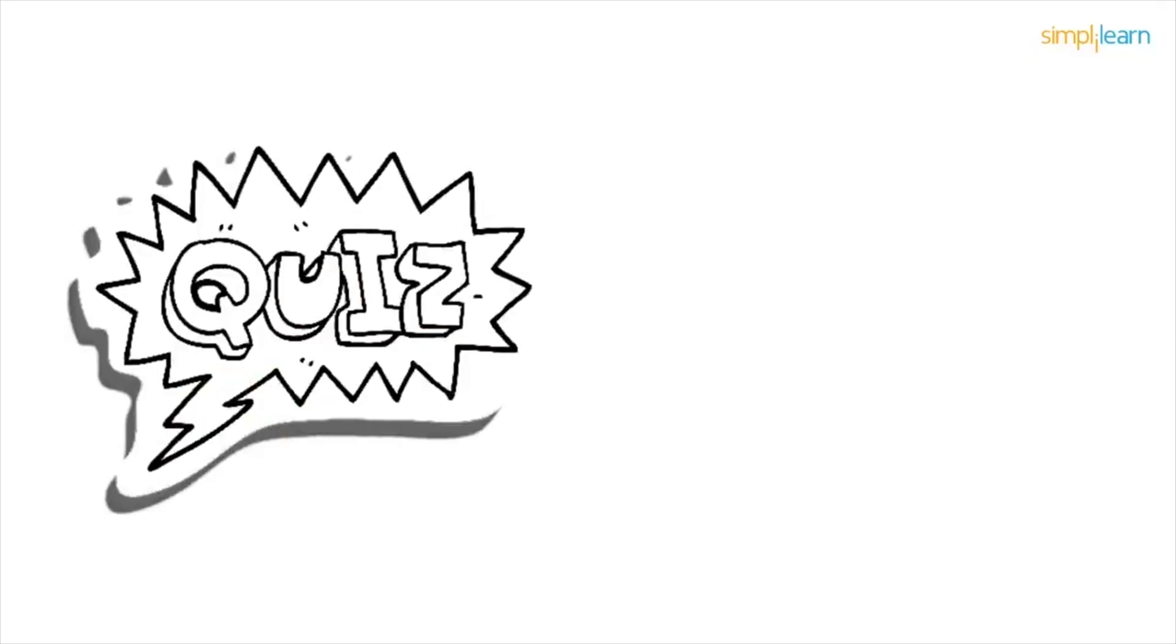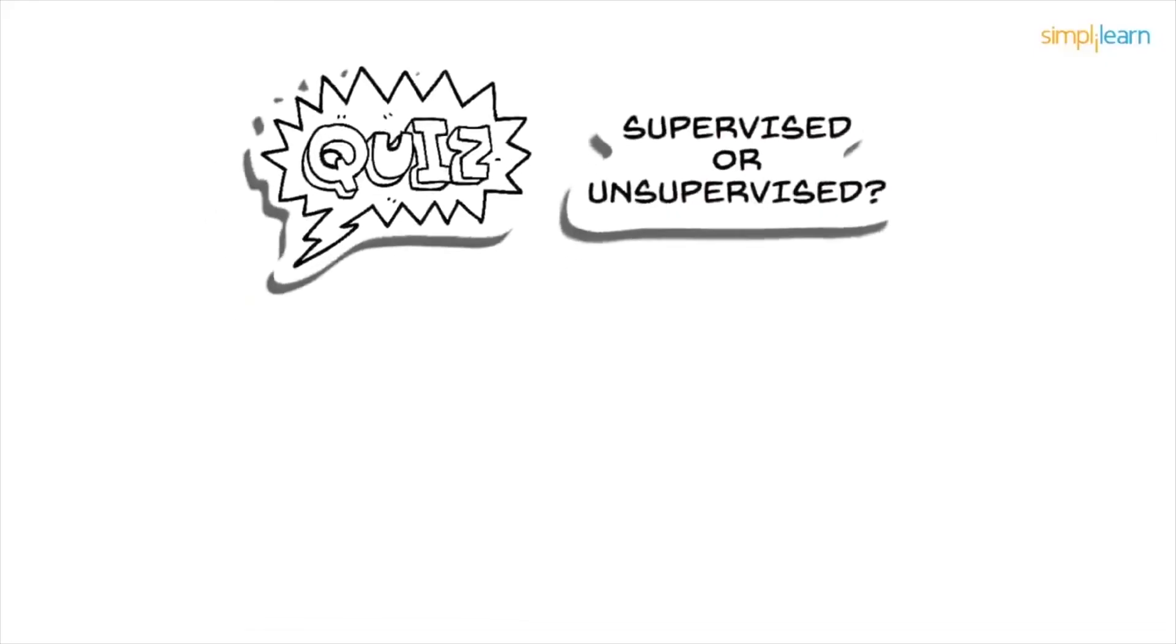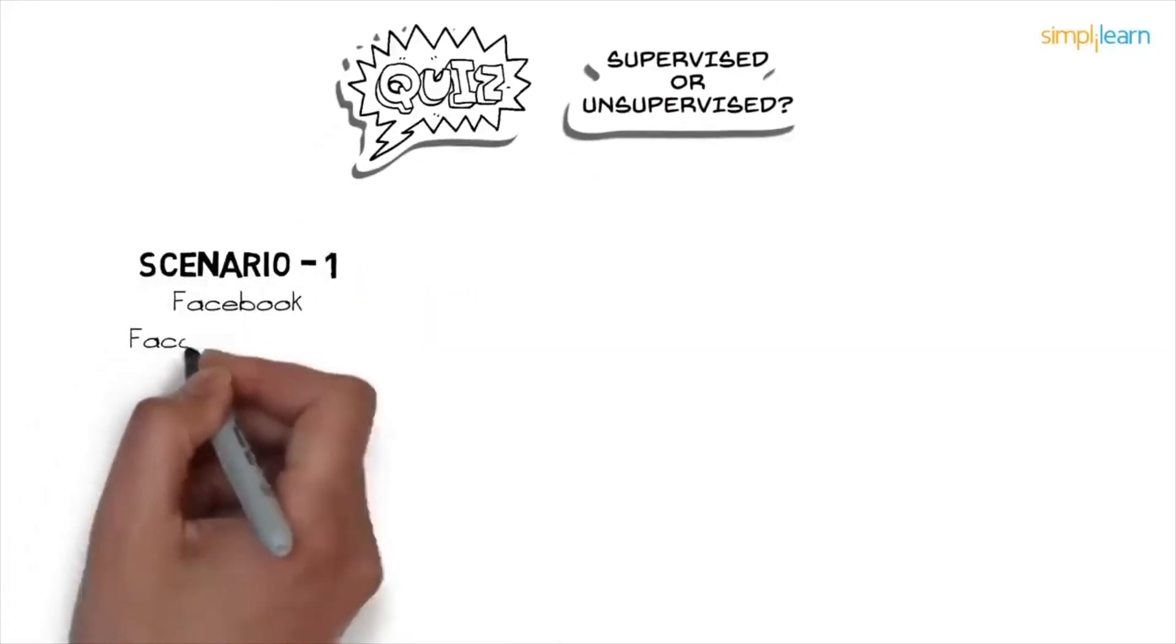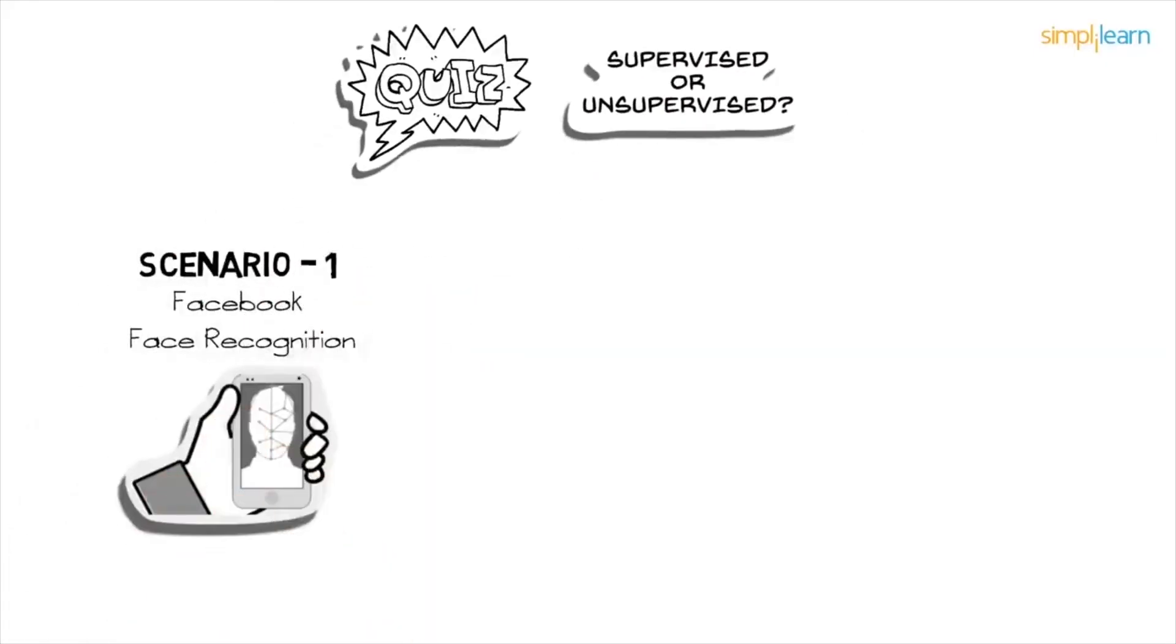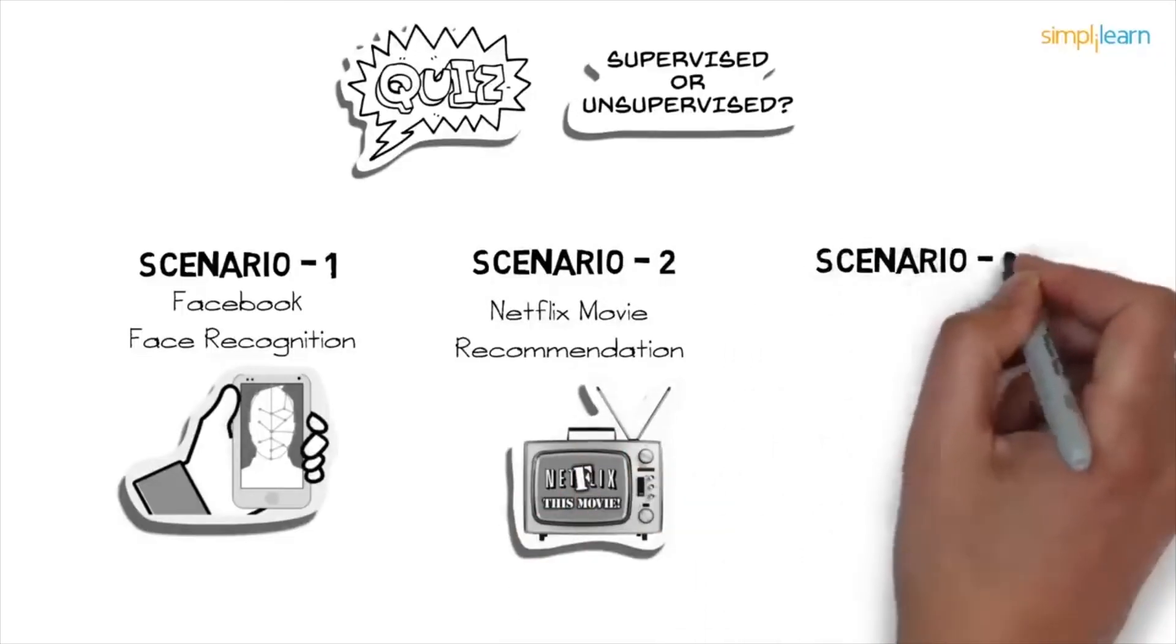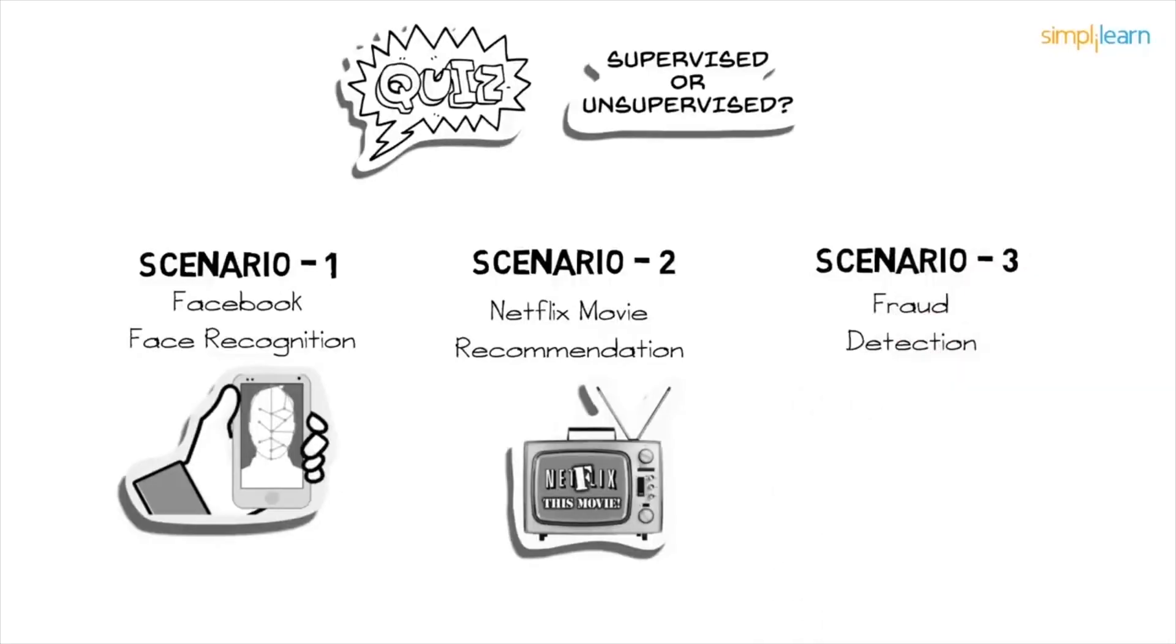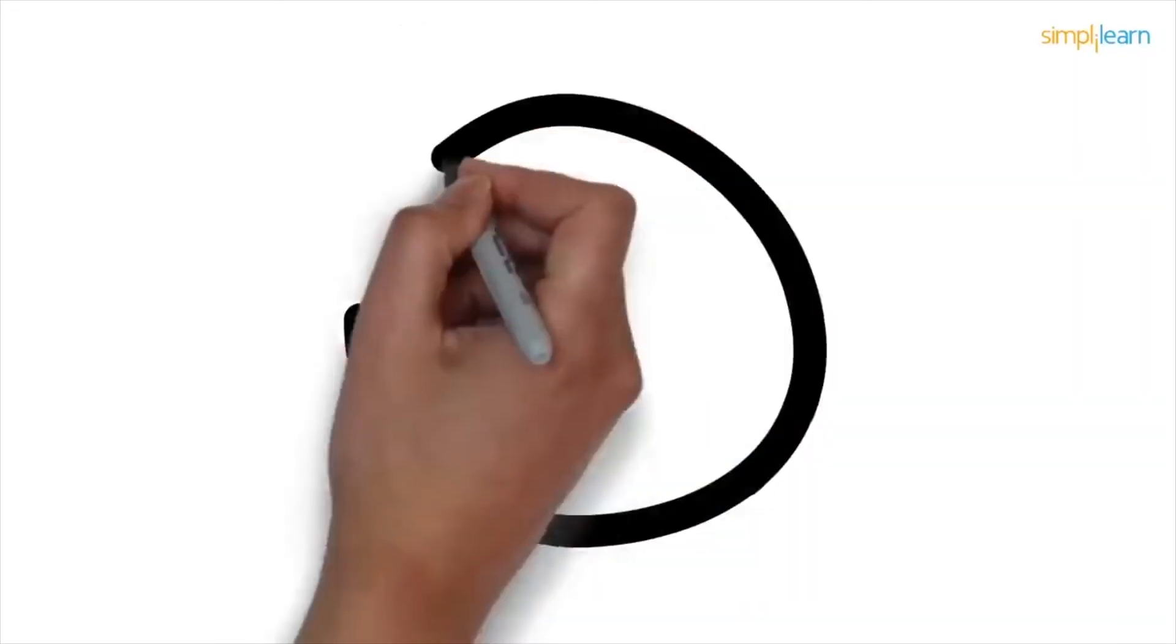You have to determine whether the given scenarios use supervised or unsupervised learning. Scenario 1: Facebook recognizes your friend in a picture from an album of tagged photographs. Scenario 2: Netflix recommends new movies based on someone's past movie choices. Scenario 3: Analyzing bank data for suspicious transactions and flagging fraud transactions. Think wisely and comment below your answers.